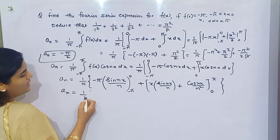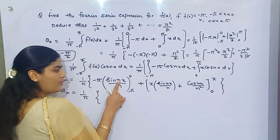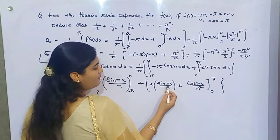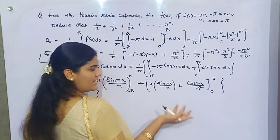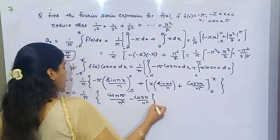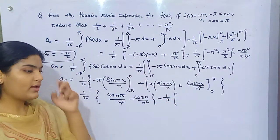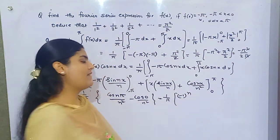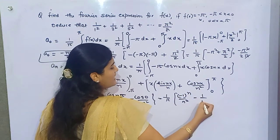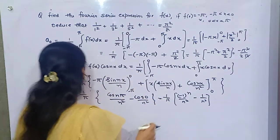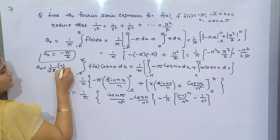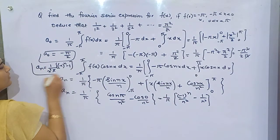Now expanding: sin(0) is 0, sin(nπ) for any multiple of π is always 0, so the sine terms vanish. Only the cosine term remains: cos(nπ)/n² minus cos(0)/n². Since cos(nπ) equals (−1)ⁿ, this gives (−1)ⁿ/n² minus 1/n². Taking n² common, your Aₙ is (1/n²π) times [(−1)ⁿ − 1].